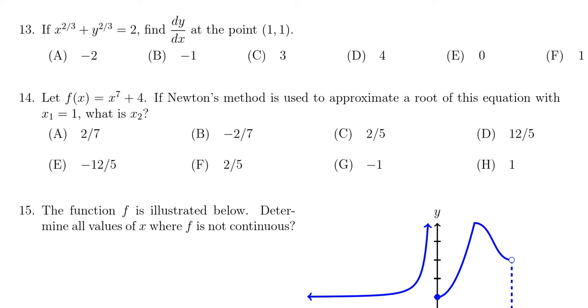So we have to compute the derivative implicitly in this situation. We're going to take the derivative of the left-hand side and the right-hand side as well. The derivative of the right-hand side is easy enough. It's going to be zero since it's constant.